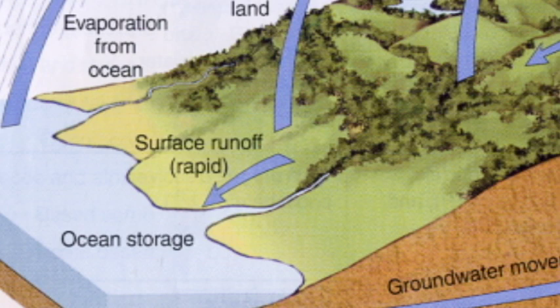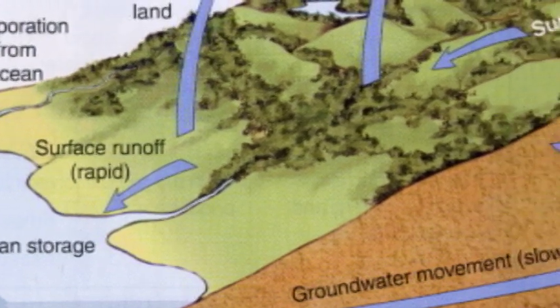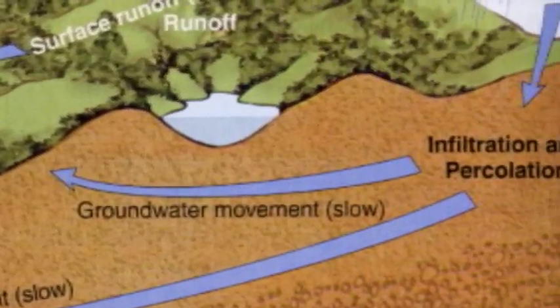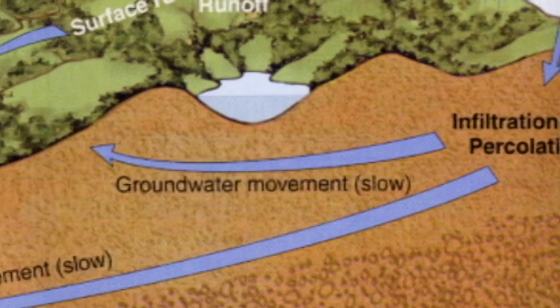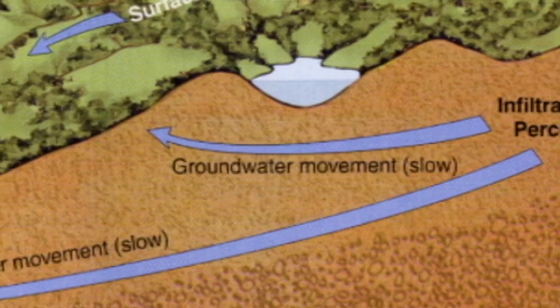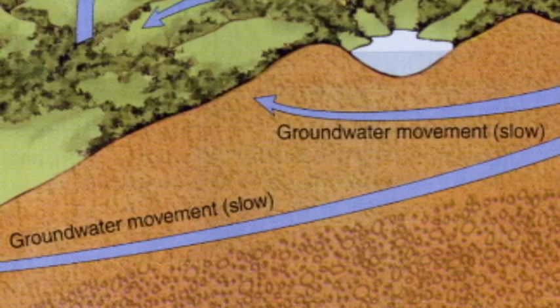Surface runoff also causes soil erosion and serves as a major medium for transporting nutrients across ecosystems. Some of the water returning to the land goes through percolation, in which it infiltrates the soil and rock and then moves downward, dissolving minerals from porous rock on the way. This groundwater is stored in the pores and cracks of rock. When the pores are joined, networks of water channels are formed called aquifers.